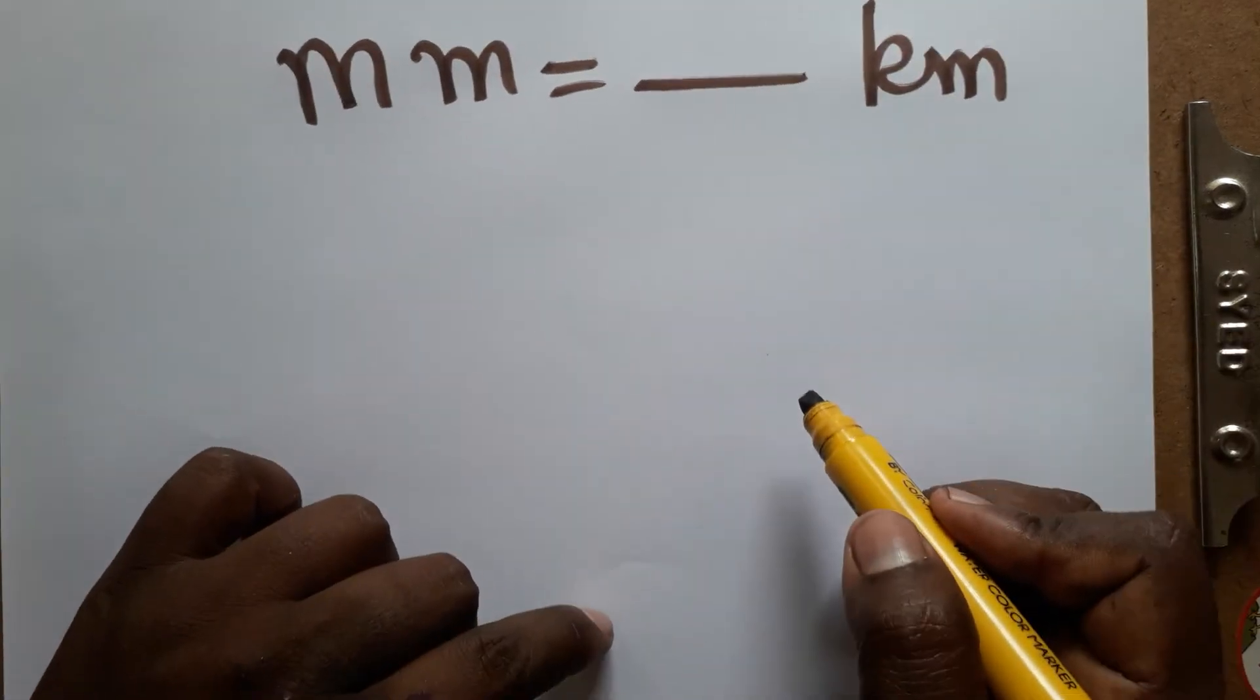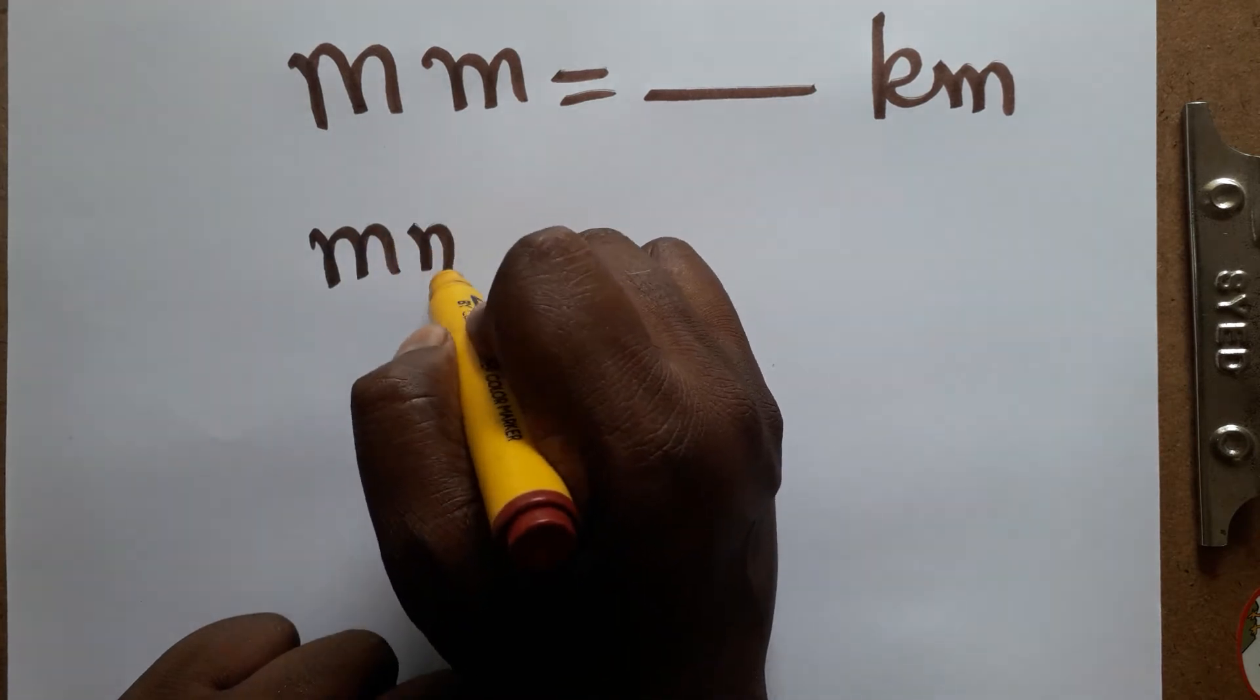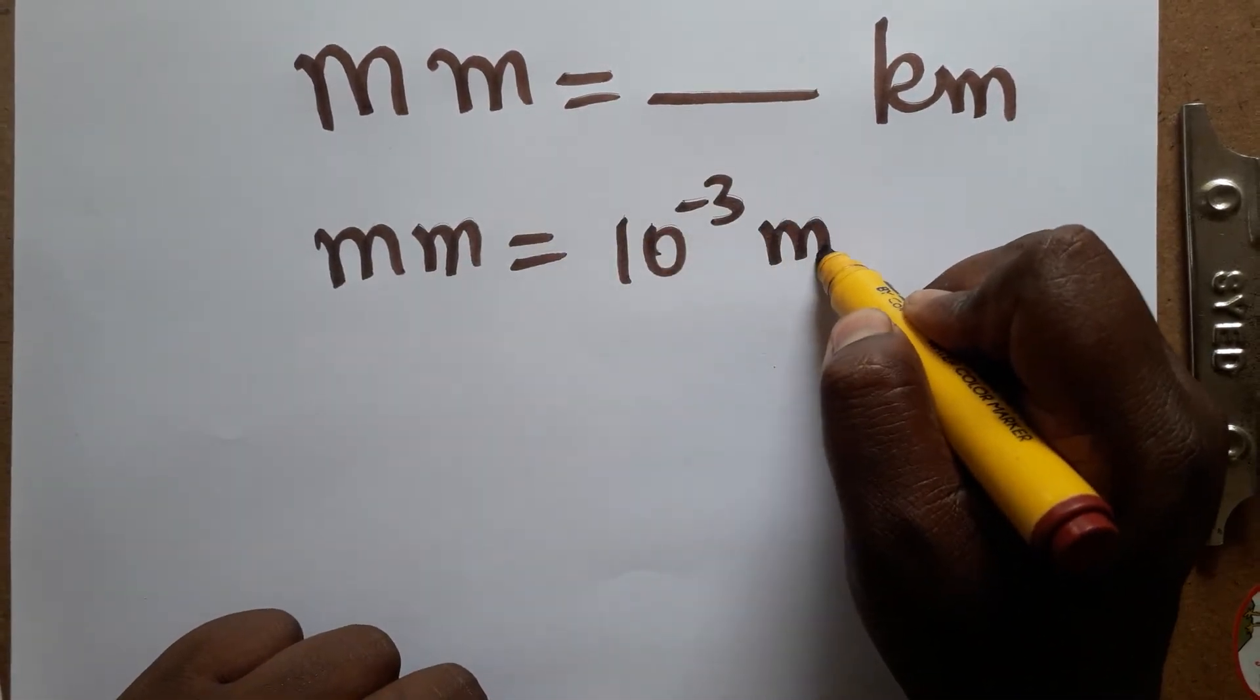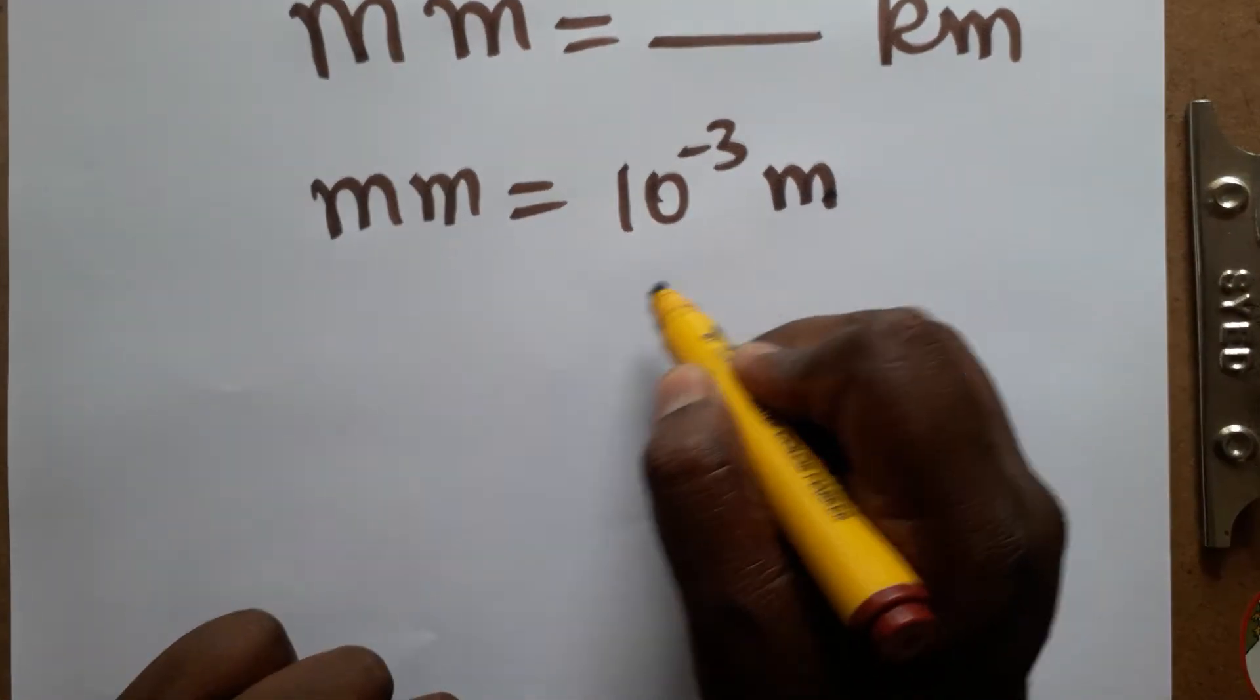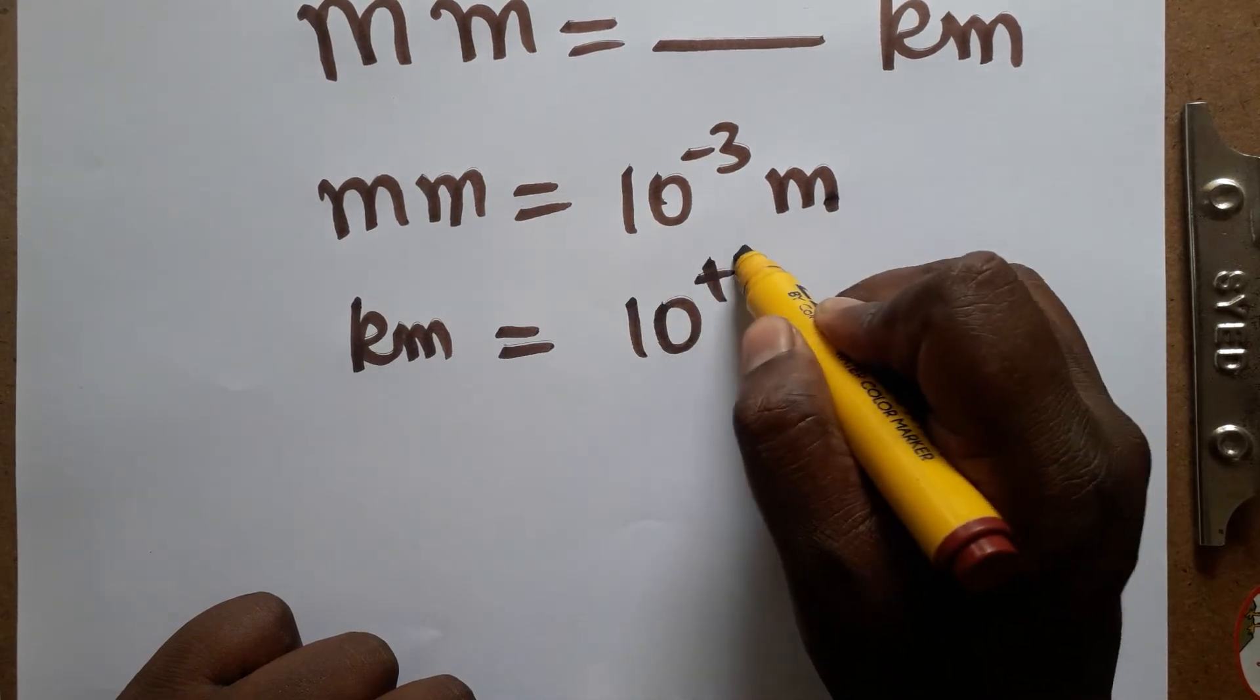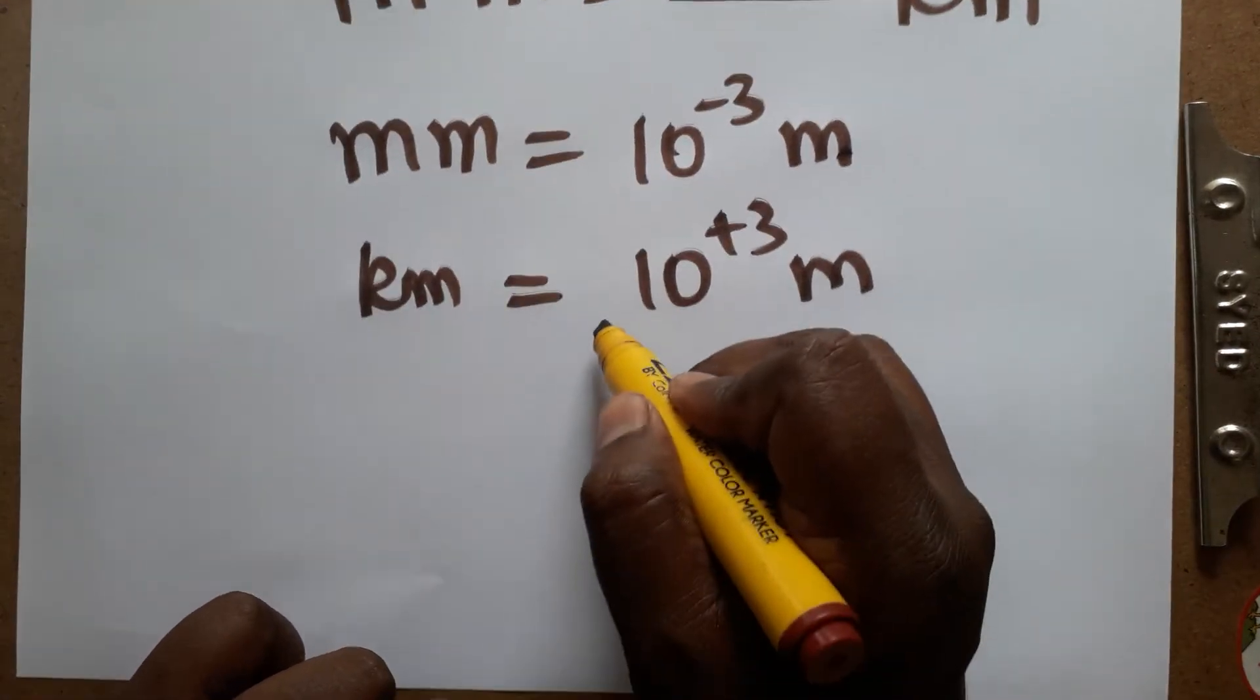Today we are going to learn how to convert from millimeter to kilometer. First thing we know, millimeter to meter is 10 power minus 3 meters. Kilometer to meter is 10 power plus 3 meters.